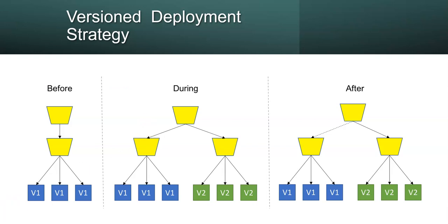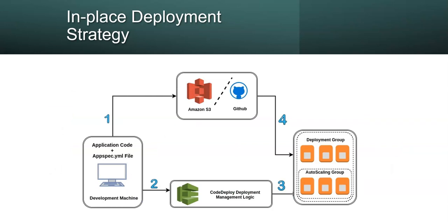The next one is in-place deployment strategy. In-place deployment is a deployment strategy that updates the application version without replacing any infrastructure components. In an in-place deployment the previous version of the application on each compute resource is stopped, the latest application is installed, and the new version of the application is started and validated. This allows application deployments to proceed with minimum disturbance to underlying infrastructure. So you are not disturbing any infrastructure, you are just simply placing the new version of your application.